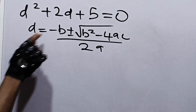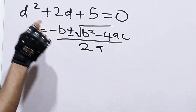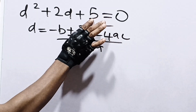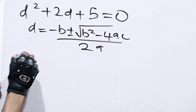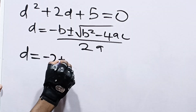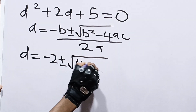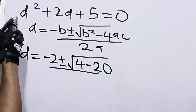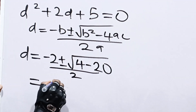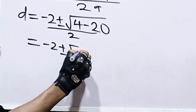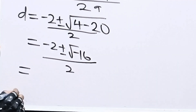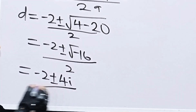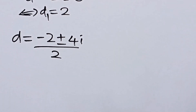Here, b is the coefficient of d, which is 2; a is the coefficient of d squared, which is 1; and c is the constant term, which is 5. So d equals negative 2 plus or minus the square root of 2 squared minus 4 times 1 times 5, all over 2 times 1. That gives us negative 2 plus or minus the square root of 4 minus 20, which is the square root of negative 16, all over 2.